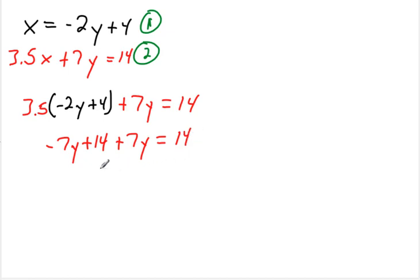Okay, now combining the like terms, negative 7y plus 7y is 0, so we end up with 14 equals 14.